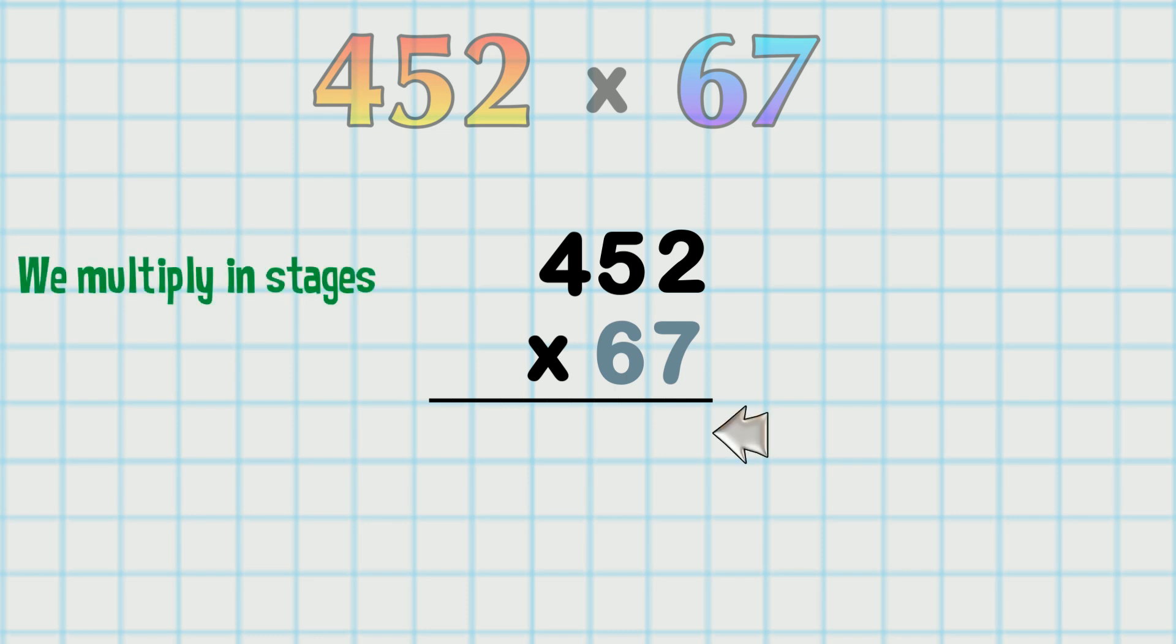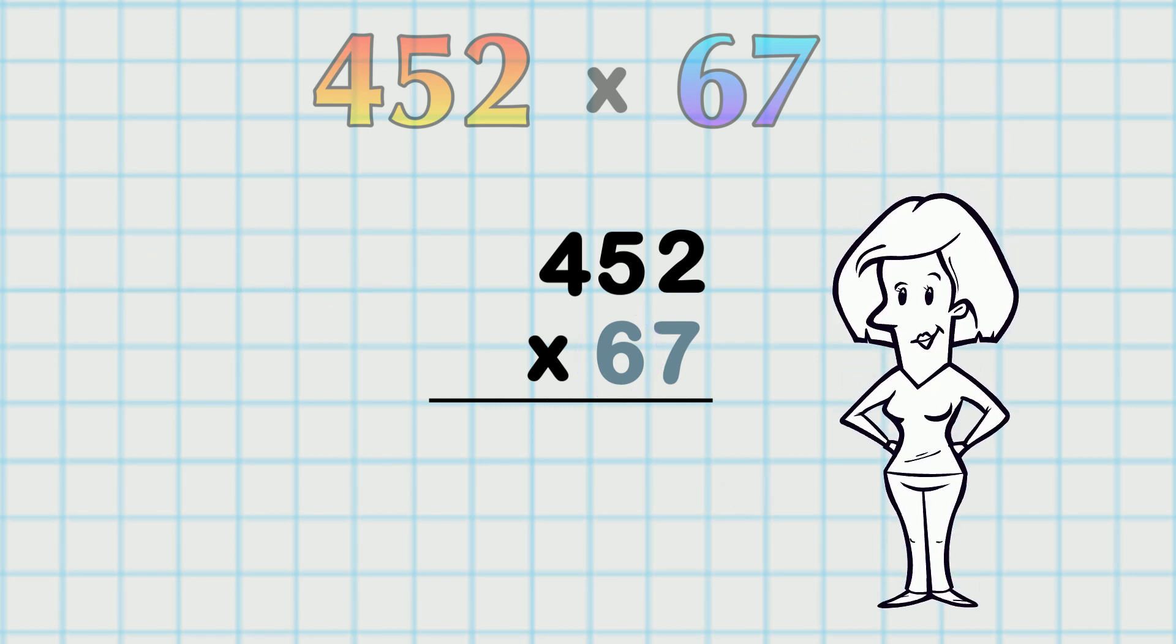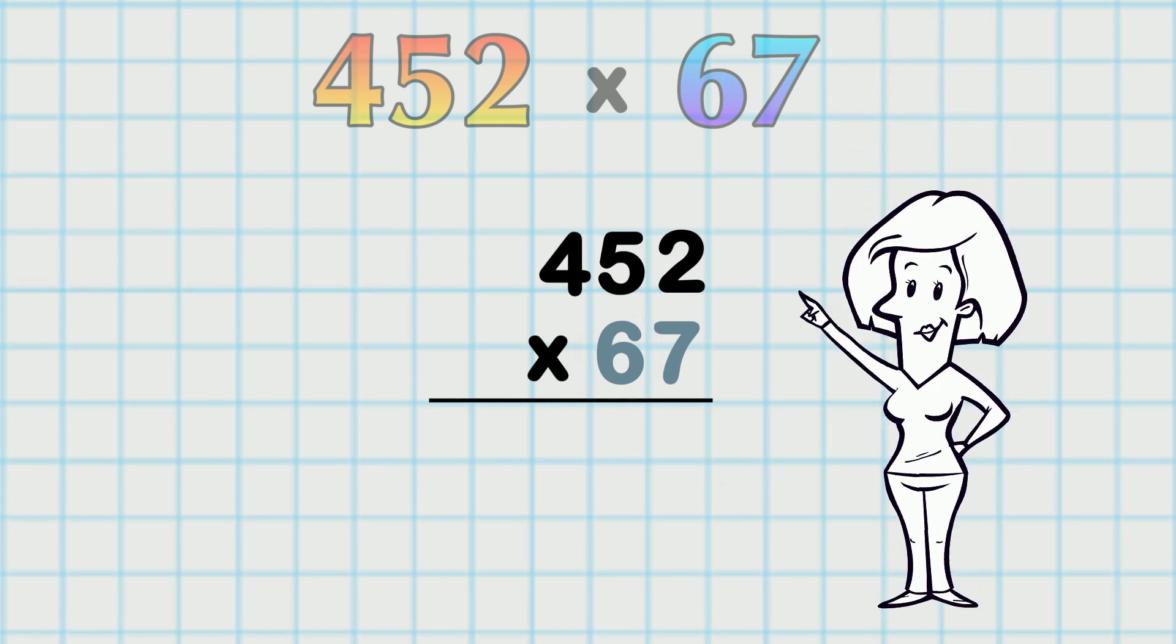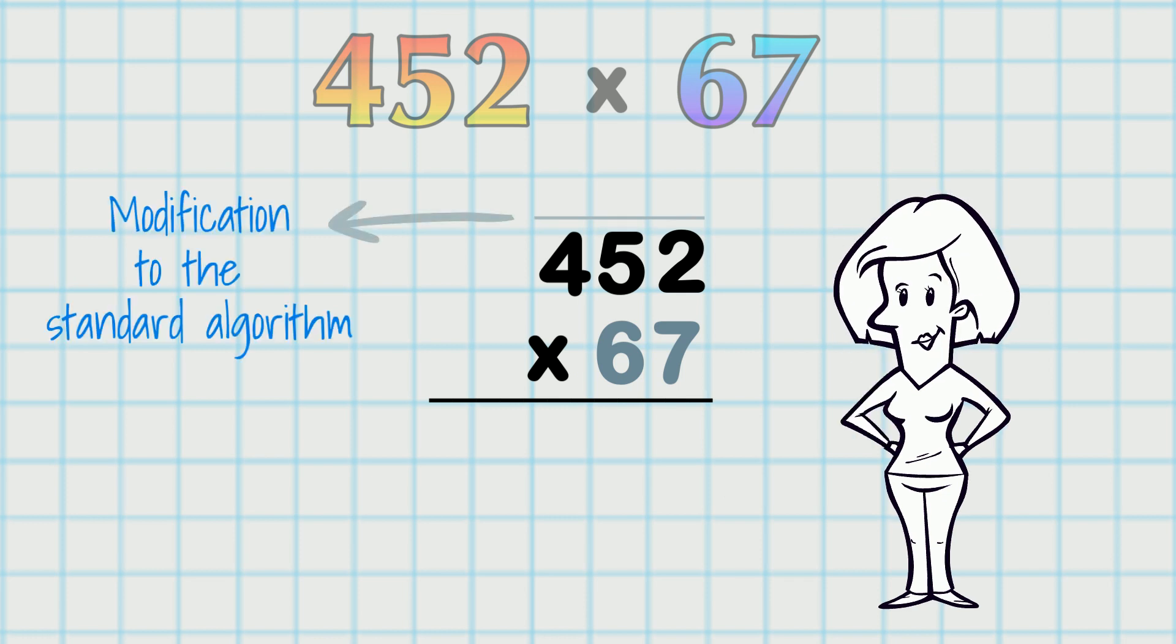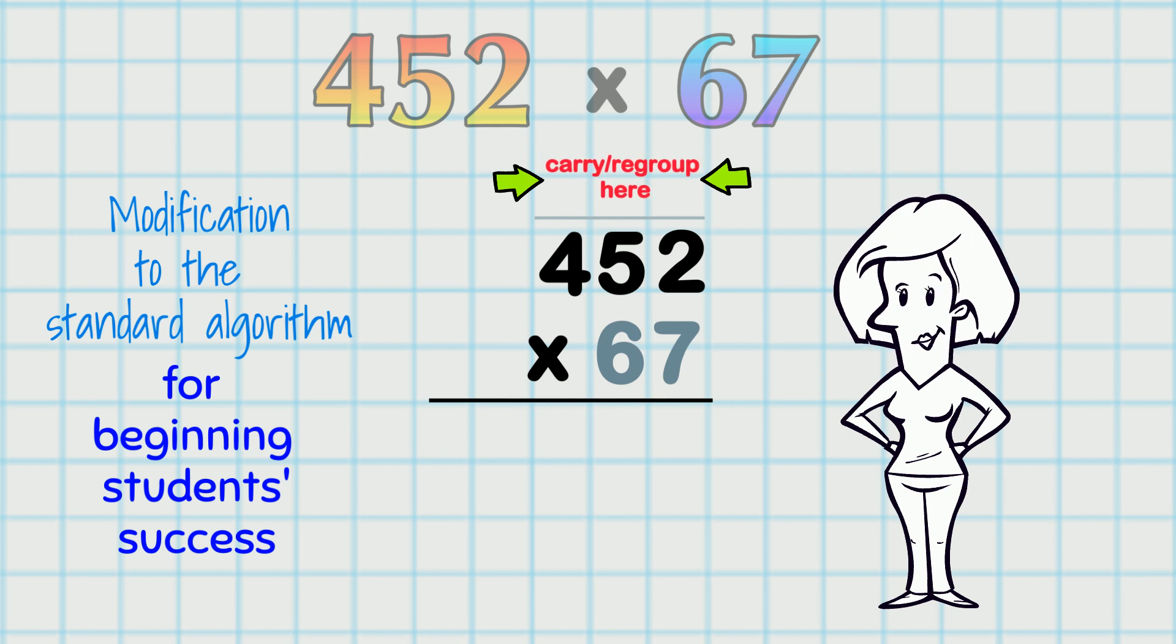On the first line here, we multiply by 7. And on the second line, by 60. Before I start to multiply, I put a line in here. This is a modification to the standard algorithm that I make for beginning students' success. It gives us a space in which we can put those carried or regrouped digits. And that defined space helps us to succeed.